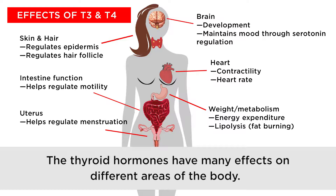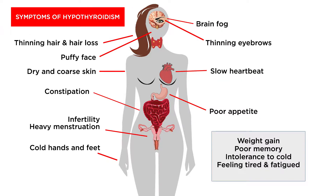T3 and T4 have multiple effects in the body, including regulating skin and hair health, gut motility, menstruation, and brain development. They maintain mood through serotonin regulation, help with heart contractility and heart rate, and are responsible for energy expenditure and fat burning. Symptoms of hypothyroidism include brain fog, thinning eyebrows, slow heartbeat, poor appetite, weight gain, poor memory, and intolerance to cold.